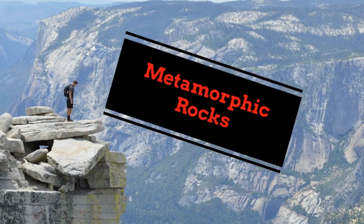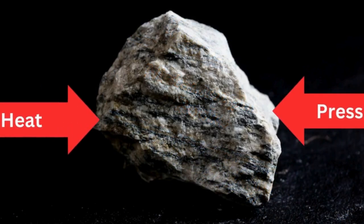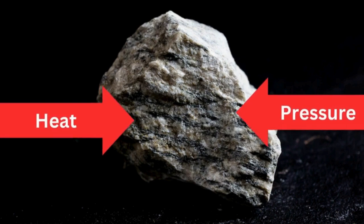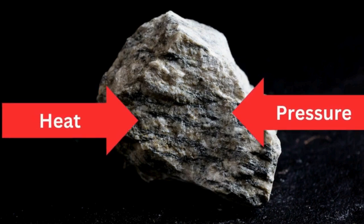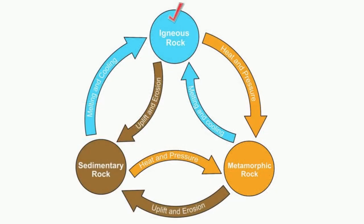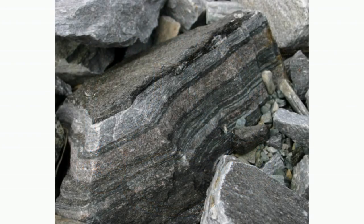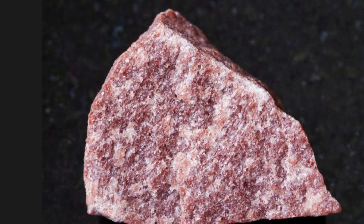Metamorphic rocks are created when extreme heat and pressure changes the original structure into a new type of rock. Sedimentary rock, igneous rocks, and even metamorphic rocks can all become new metamorphic rock when exposed to heat and pressure. There are two major types of metamorphic rocks: foliated rocks, which have layered bands, and non-foliated rocks, which do not have these layers or bands.